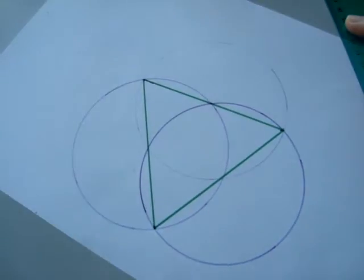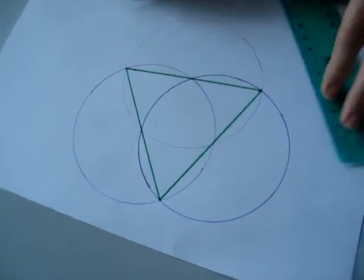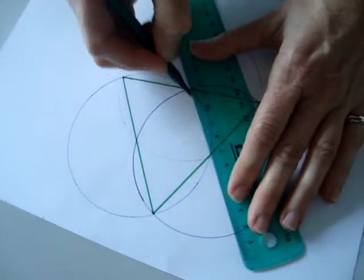We've got an equilateral triangle. That is the diameter of each of those circles. And then this is the radius here, cutting that in half.